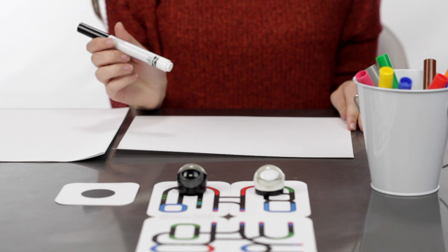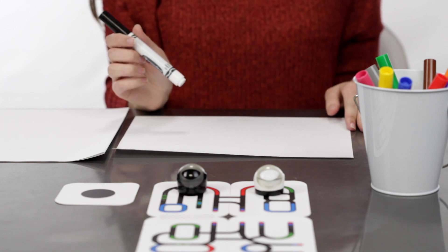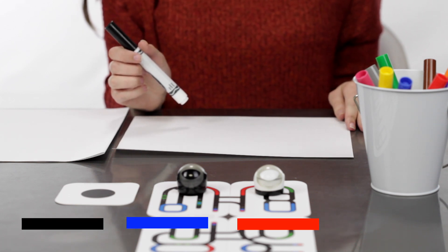To really use OzoBot's color language you'll need a black, blue, red, and green marker.